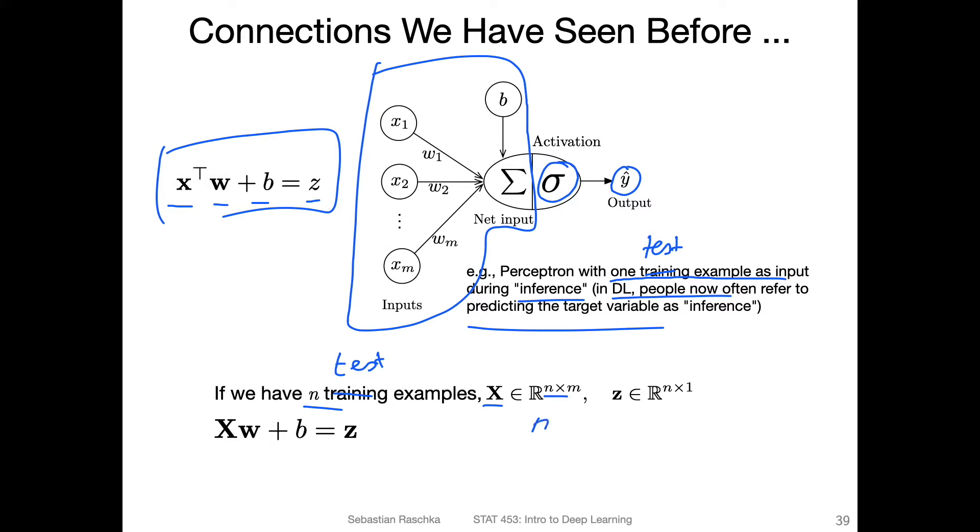n is the number of examples. We would write it as follows. So here, X is n times m, w is m times one, b is just a scalar. And then the output should be n times m dot m times one, it should be n times one. So in this way, we have a vector. Each value in the vector is the net input for the corresponding test example. That is how we can process more data points at the same time with still a single operation here.